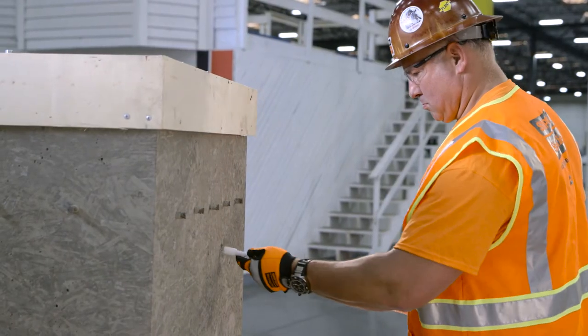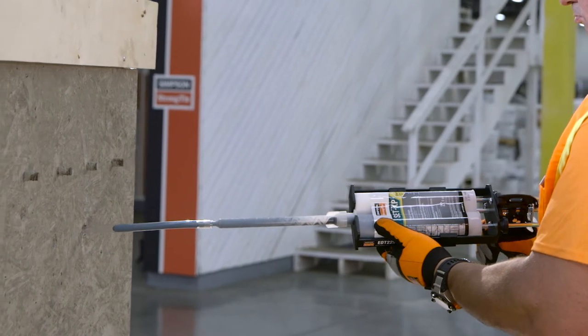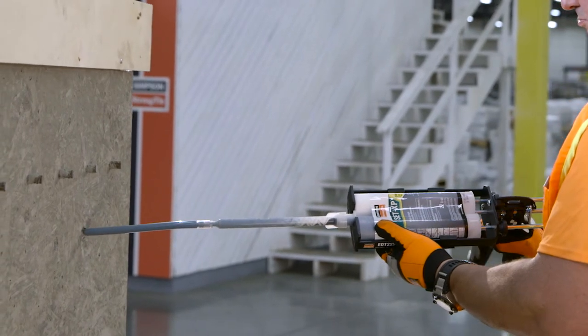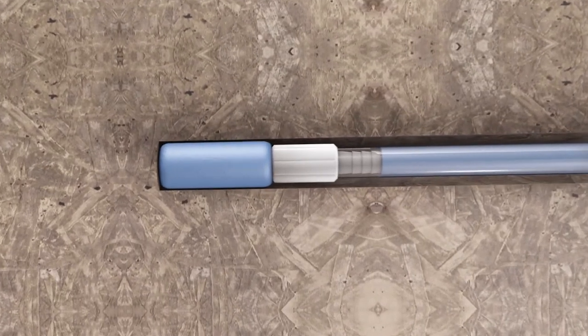Insert the piston plug to the back of the drilled hole and dispense adhesive. As the adhesive is dispensed into the drilled hole, the piston plug will slowly displace out of the hole due to back pressure, preventing air gaps.